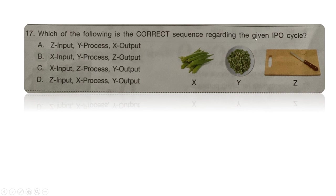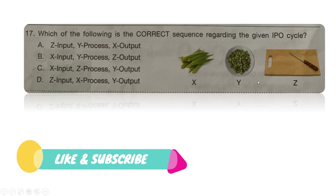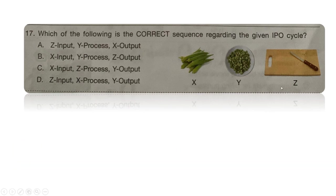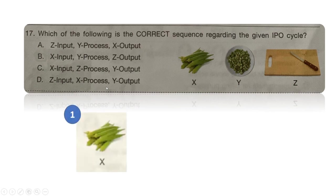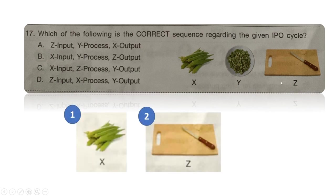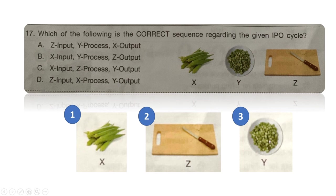Next question: which of the following is the correct sequence for the given IPO cycle — Input, Processing, and Output? Three images are given labeled X, Y, and Z. Step 1: take the lady finger — that is X (input). Step 2: take it to the chopping board — that is Z (process). Step 3: the output is the chopped lady finger — that is Y. So the IPO cycle is option C: X as input, Z as process, and Y as output.